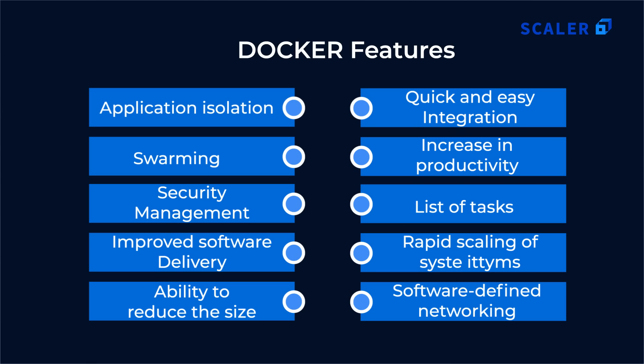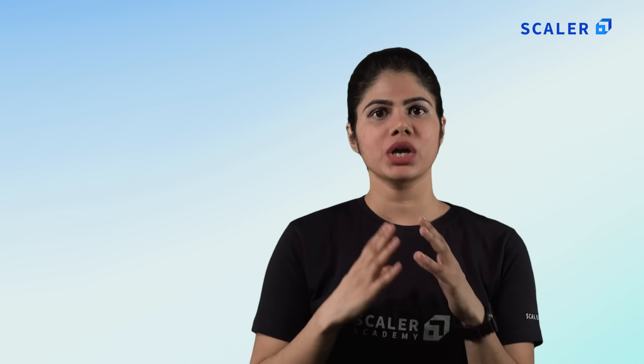Features of Docker: First, application isolation — applications created using Docker run in an isolated environment, so Docker can execute all types of applications independently. Second, swarming — Swarm is the scheduling and clustering tool in Docker containers. It enables pluggable backends and is a popular self-organizing engine group that uses the Docker API.